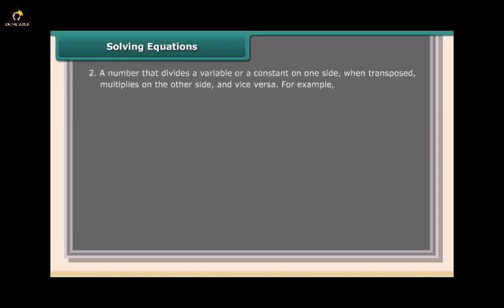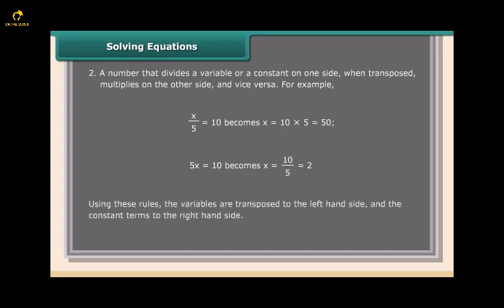A number that divides a variable or a constant on one side, when transposed, multiplies on the other side and vice versa. For example, x/5 = 10 becomes x = 10 × 5 = 50. Using these rules, the variables are transposed to the left-hand side and the constant terms to the right-hand side.